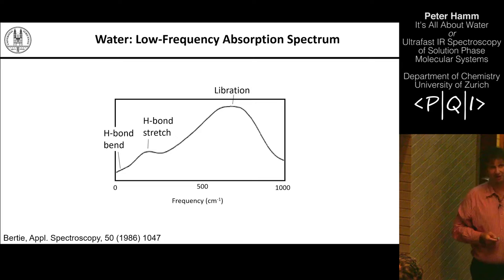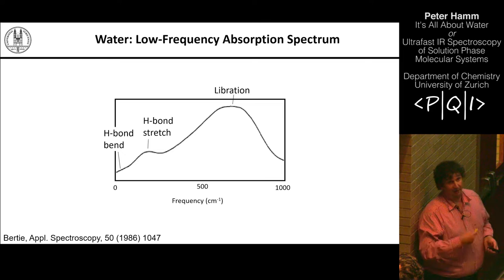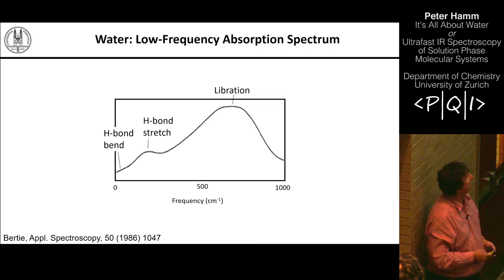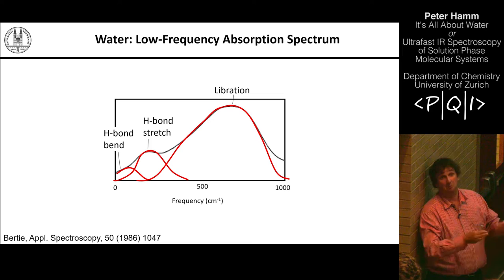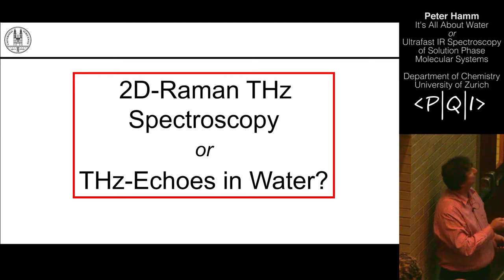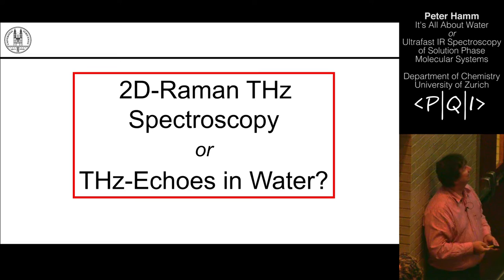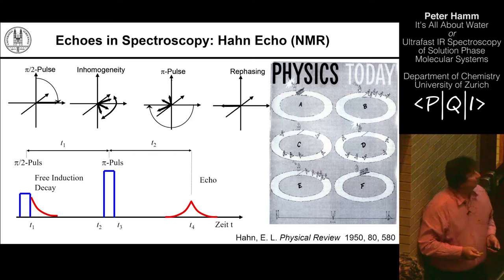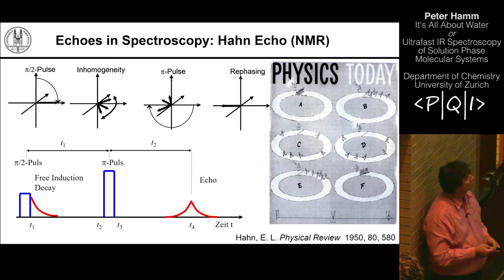Extracting information out of these spectra is difficult. As a nonlinear spectroscopist, when I see a broad spectrum I immediately ask: does it look like three features that are completely homogeneously broadened, or is there an inhomogeneous distribution underneath? We need some sort of spectroscopy to distinguish these cases. The spectroscopy we set up is what we now call 2D Raman-terahertz spectroscopy — and the question is whether we can see terahertz echoes in water.